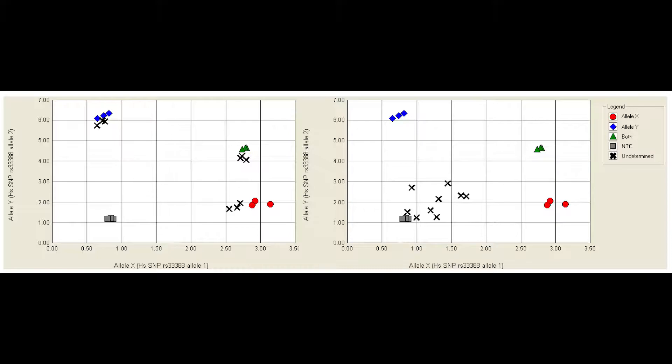When inadequate template is used in the reaction, the software is unable to make allele calls. The results are indistinguishable from non-template controls. As with the RT-qPCR reaction, the concentration provided by the NanoDrop 1 spectrophotometer and Qubit 4 fluorometer is critical for experimental outcome.